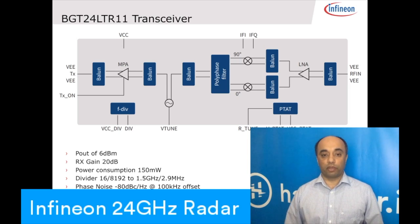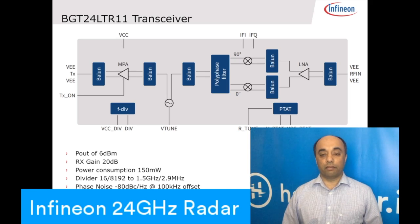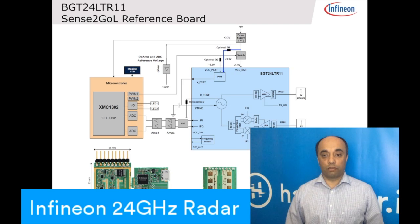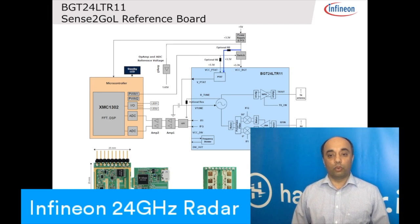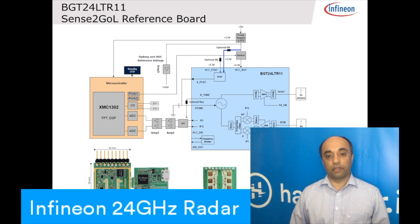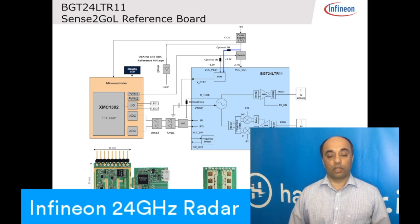The chip measures 2.4 mm by 2.4 mm. In continuous mode, it consumes 150 mW of power and runs from 3.3 V. We have 6 dBm output power from the chip, and it's guaranteed to operate in the ISM band via the inbuilt PTAT. In the reference board block diagram, the blue section is integrated inside the chip — a power amplifier, LNA, and downconverter that gives you IF I and Q signals. Those IF I/Q signals go to an onboard high-pass filter and amplifier stages, then into our XMC 1302 microcontroller. The integrated ADCs digitize those I/Q signals, run signal processing on top, and give you velocity information and whether the object is moving toward or away from the sensor.